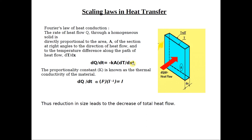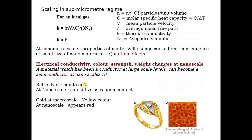For the proportionality relation: dQ/dt is proportional to area divided by dx. Area is proportional to L squared and dx is a distance proportional to L, so we get L squared over L, which is L to the power of plus 1. Rate of heat flow is directly proportional to the length scale — any reduction in size will lead to a decrease in the total rate of heat flow.